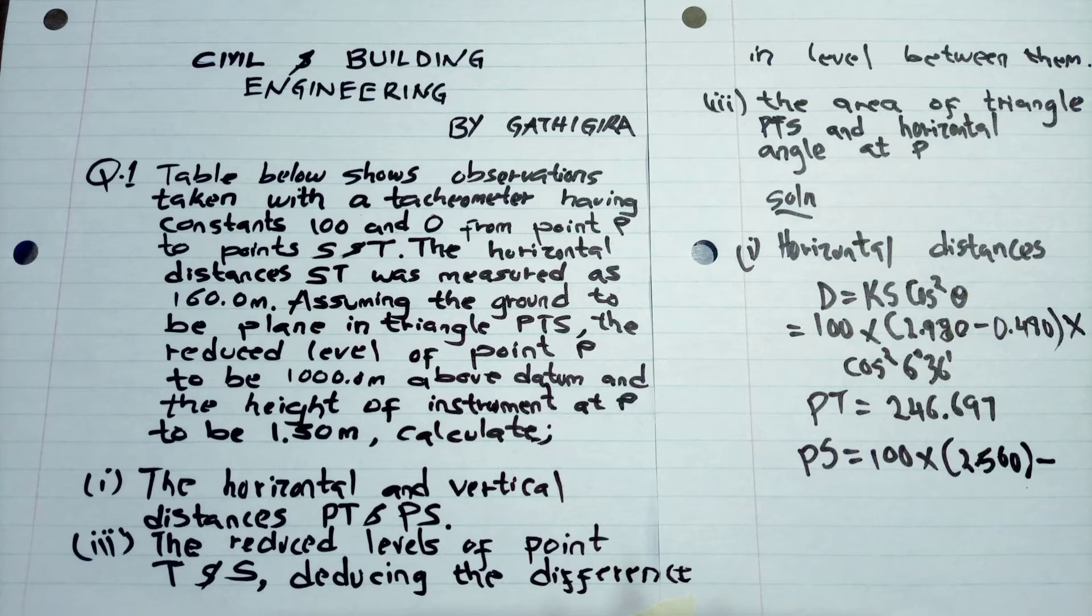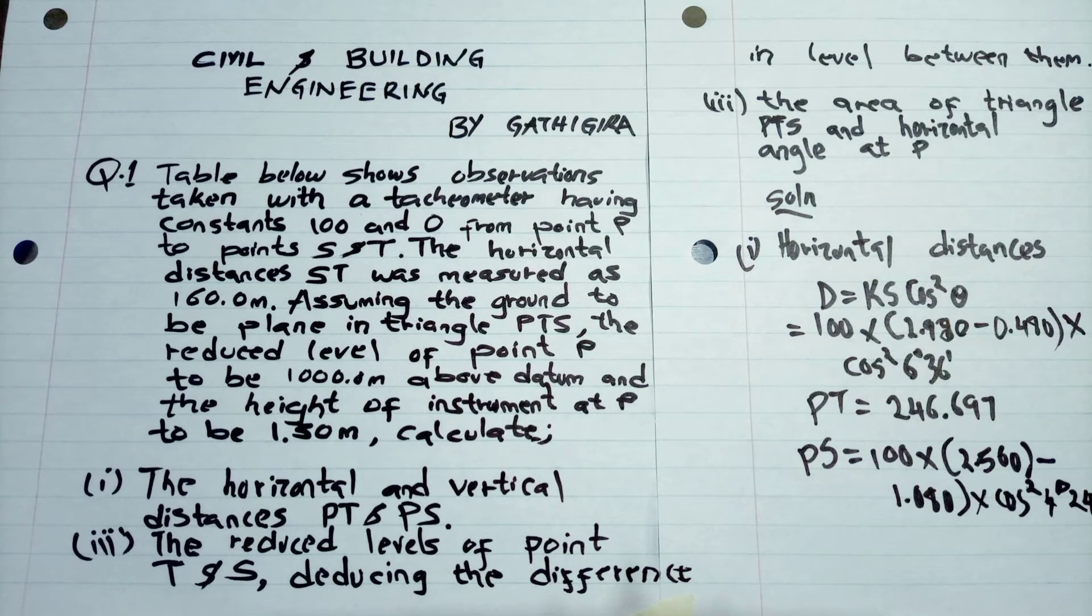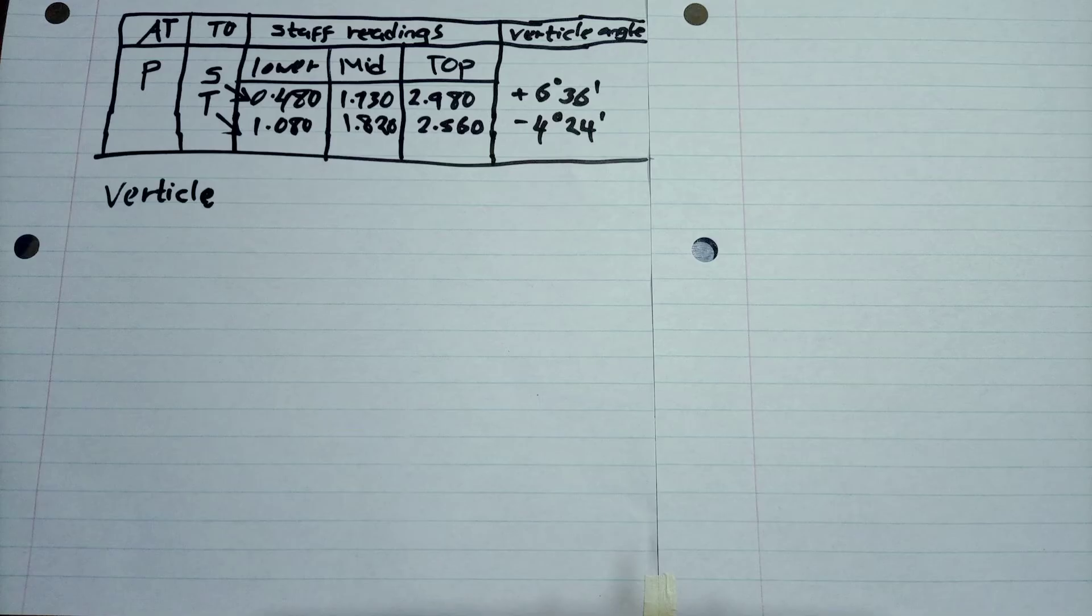Then for PS, we do the same using the formula. And then there's something you need to remember in the calculator: you first do the cos 4 degrees 24 minutes and then you square the answer.